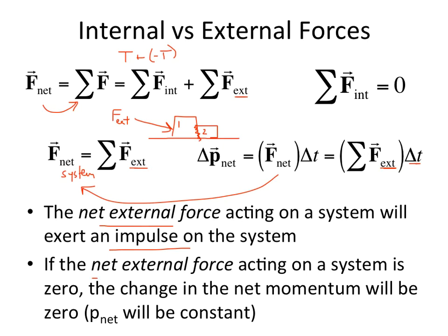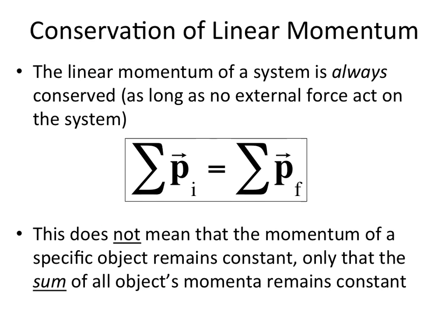If there is no net external force — if that equals zero — then there's going to be zero momentum change for the whole system. The net momentum of the system will be constant. This leads us to the conservation of linear momentum, for objects moving in a straight line. As long as there is no net external force on the system, there is no change in momentum. There can be internal forces, but these cancel out. The net momentum of the system equals zero if there's no net external force.